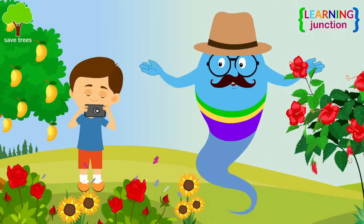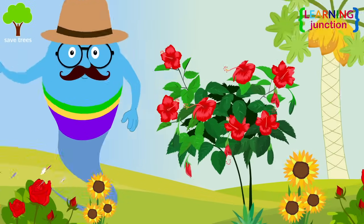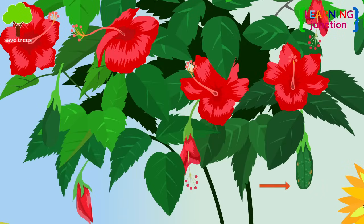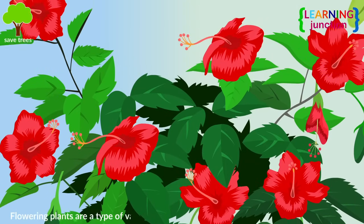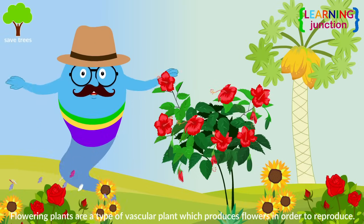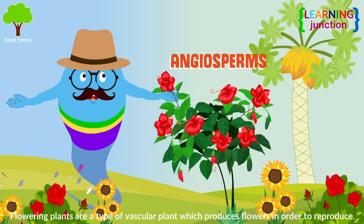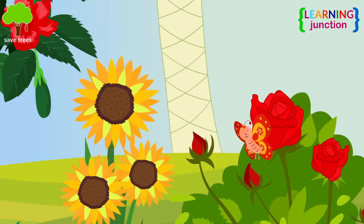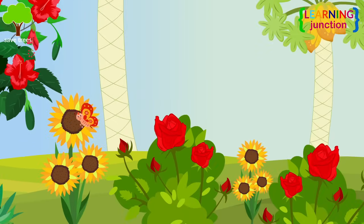Flowers look so lovely. These are the fruits of the flowering plants, and there are small seeds inside the fruits. Flowering plants are a type of vascular plant which produces flowers in order to reproduce. The scientific name for flowering plants is angiosperms. You'll notice the flowering plants easily — these plants are the dominant and most familiar group of land plants.